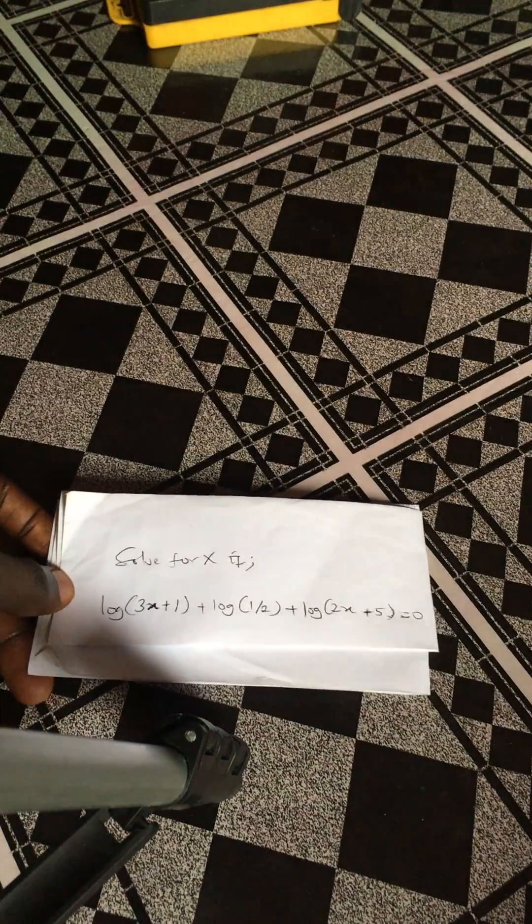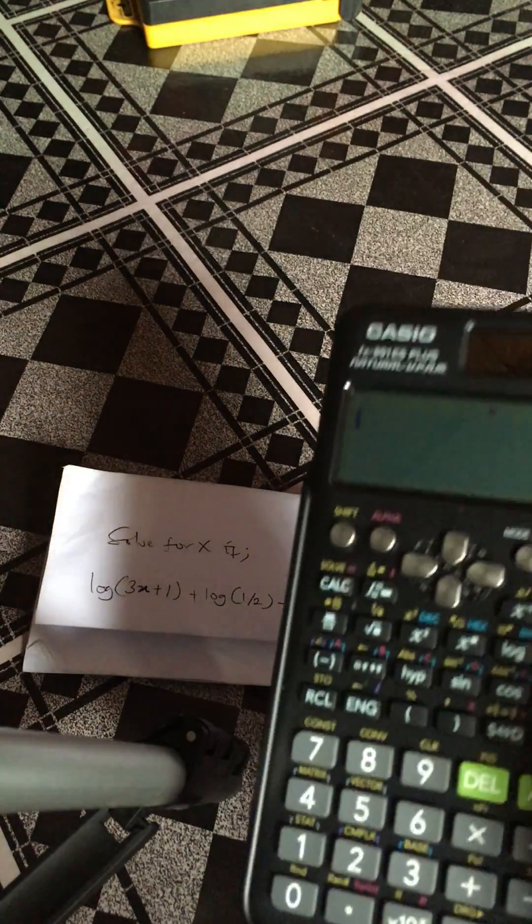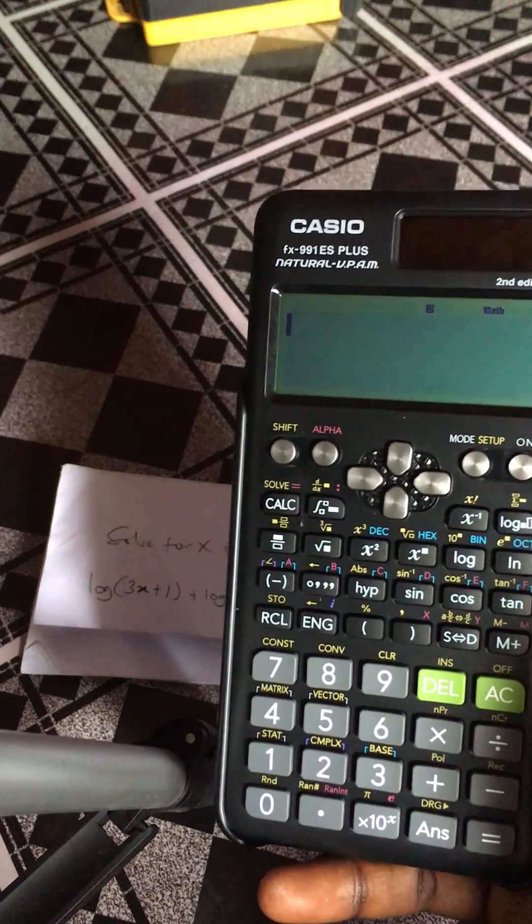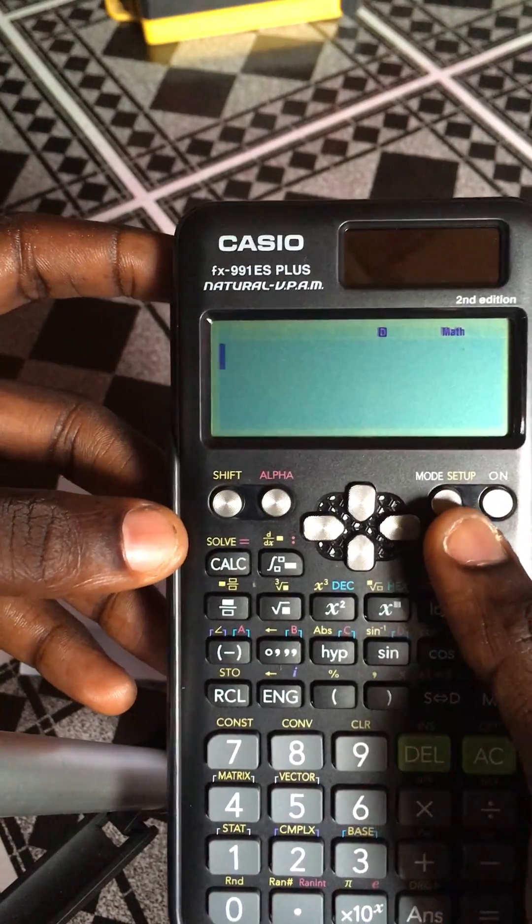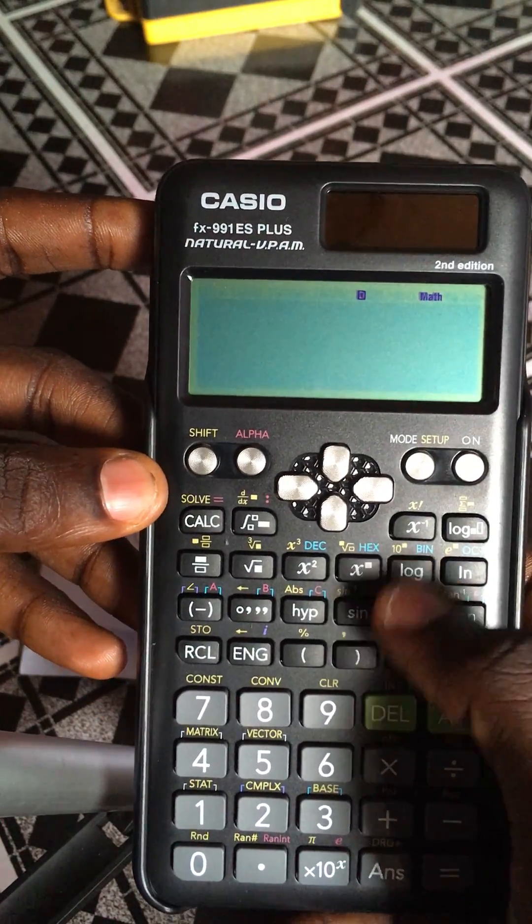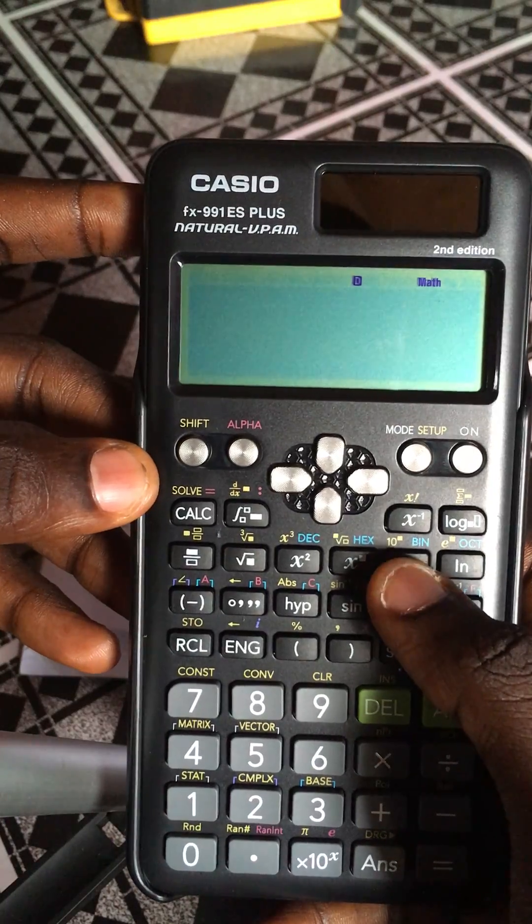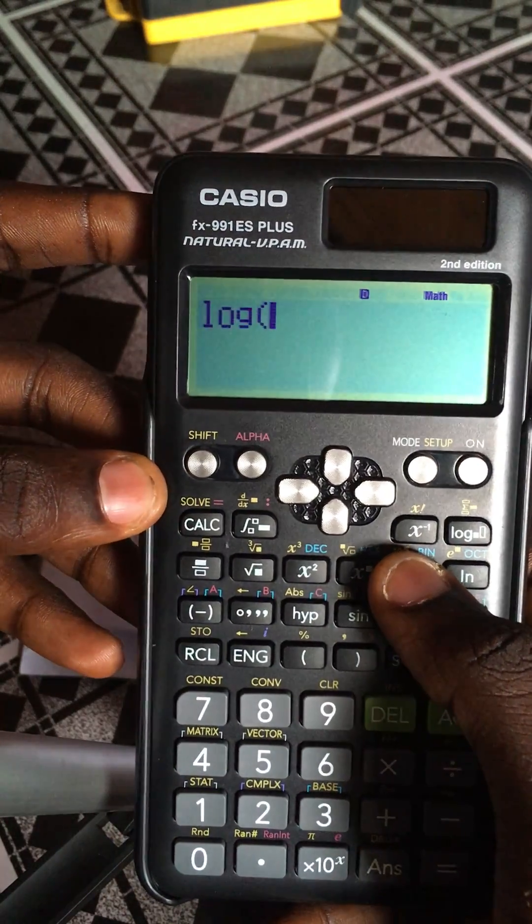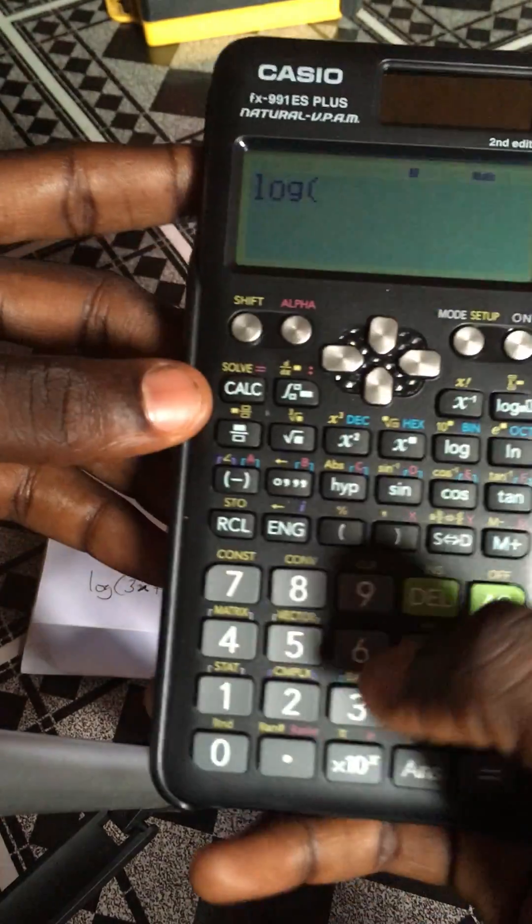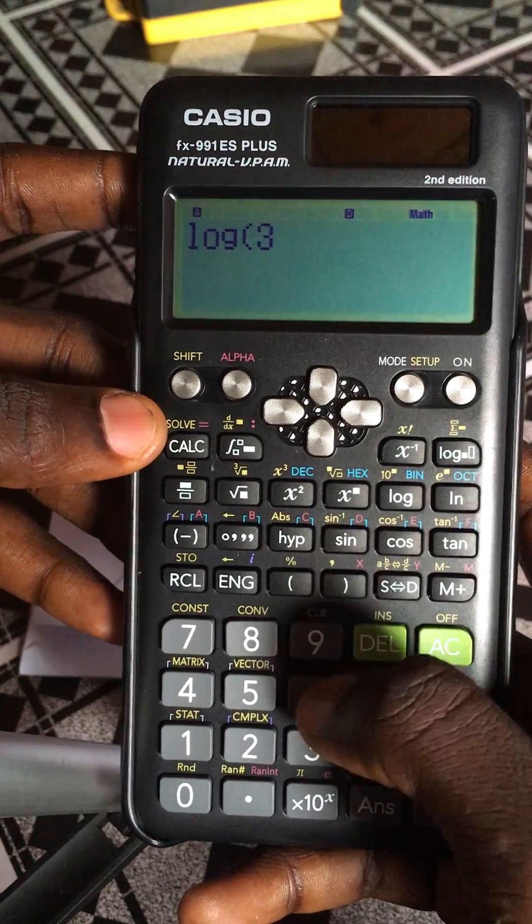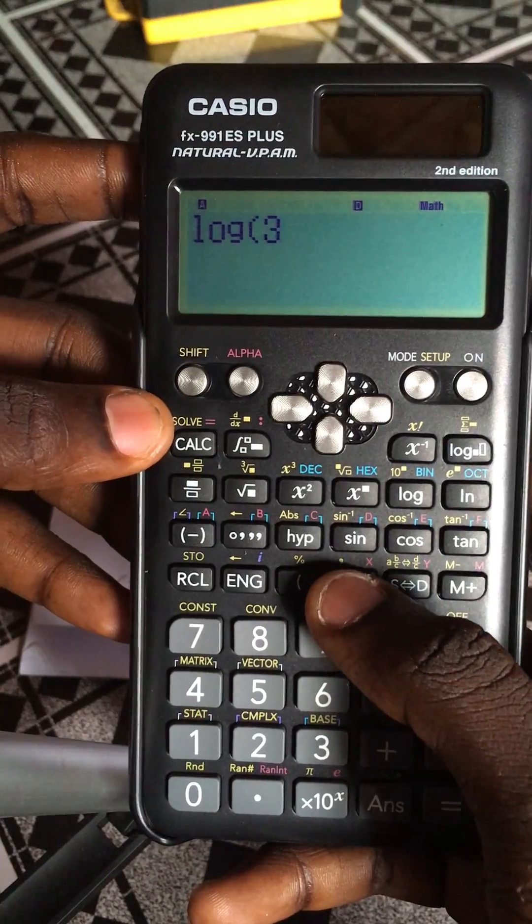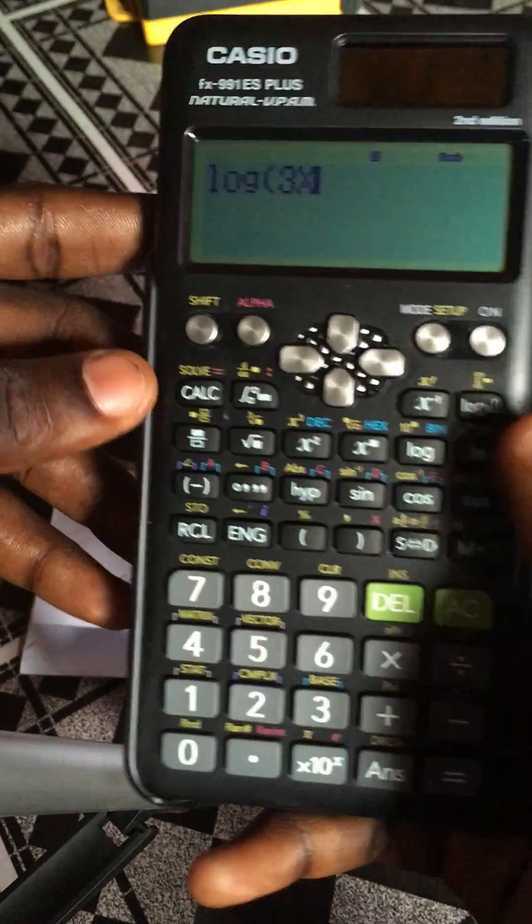Here's how we go about it. Follow my steps here: just log 3, open bracket, and close bracket, as the x figure, plus 1, then you close the bracket, plus log 1 divided by 2, close bracket.